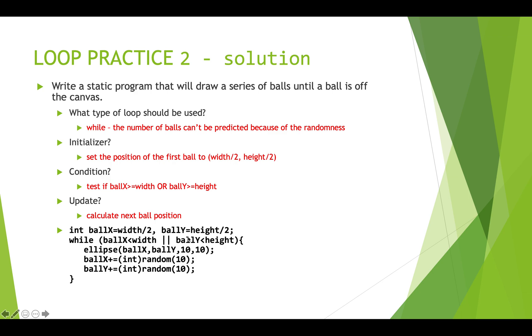So while either of those is true, then we're going to draw an ellipse, and we're using ball x and ball y as a position, the ball is going to have a diameter of 10. And then ball x plus equals random of 10. So we're going to add a little bit to the x position, add a little bit to the y position each time through.